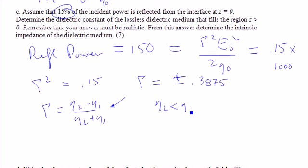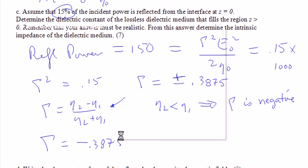Okay, so if η₂ is less than η₁, which would be the case when we're going from air to a dielectric, then the reflection coefficient is negative. Since for realistic dielectric, the η₂ must always be less than η₁, because εᵣ is greater in the dielectric. So, the reflection coefficient is equal to minus 0.3875.